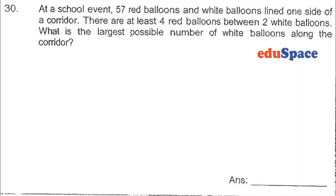At a school event, 57 red balloons and white balloons line one side of a corridor. There are at least four red balloons between two white balloons. What is the largest possible number of white balloons along the corridor?